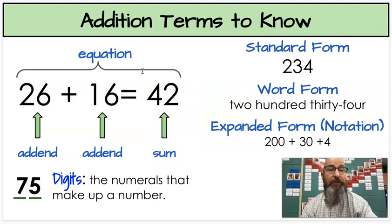Now, some addition terms I want us to make sure we remember is when we're adding and we have an equation, the addition problem is called an equation. The two numbers you're adding, those are called addends. And the answer to an addition question is called a sum. Sometimes you might hear it called a total or even sum total, but usually we call it a sum. These numbers that we're adding are each made up of digits. And digits are the numerals that make up a number. So for instance, seventy-five here is a two-digit number because you see two digits.